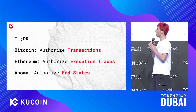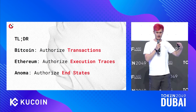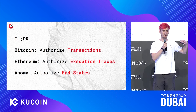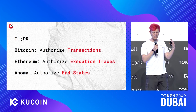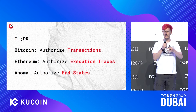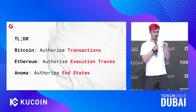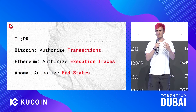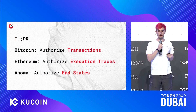So with that quick TLDR: in Bitcoin, you really authorize transactions. In Ethereum, you authorize execution traces — you authorize how to perform specific steps. In Anoma and intent-centric designs, you authorize specific end states. And the states here are truly arbitrary. You can authorize arbitrary end states, and the system can figure out how to achieve what you wanted from your intent.